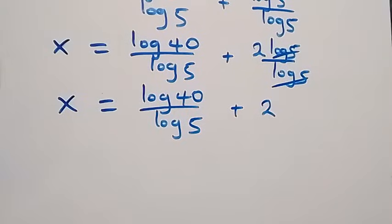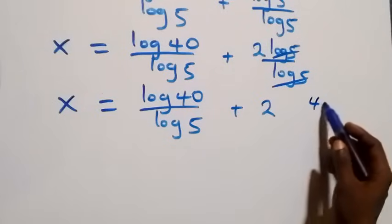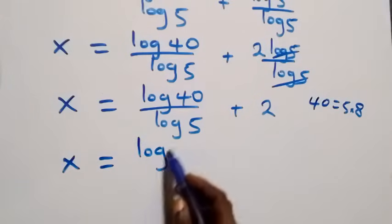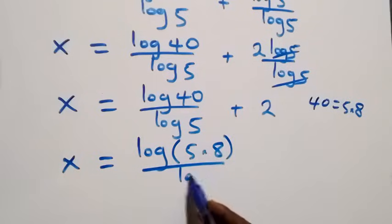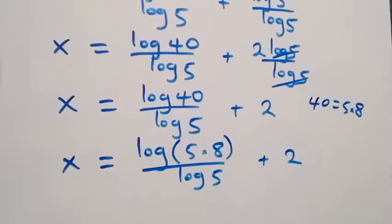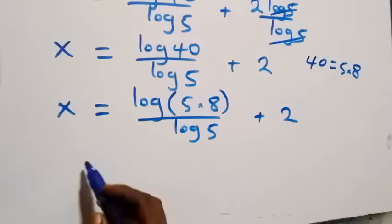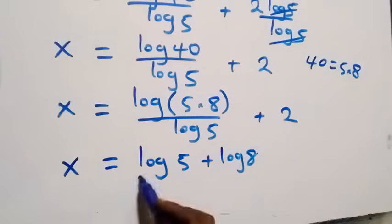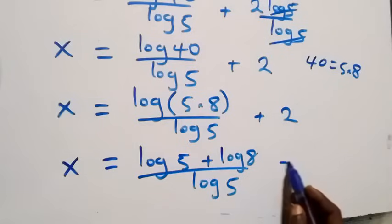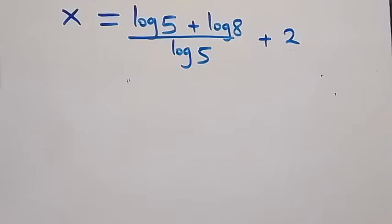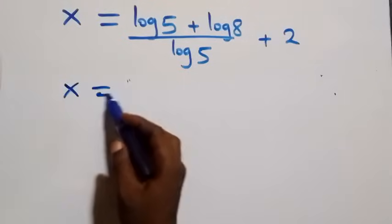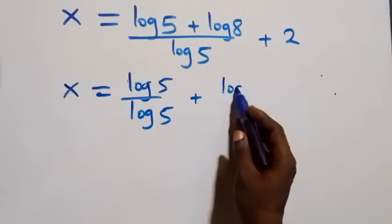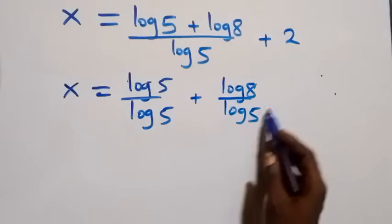We can also write 40 as 5 times 8. So x equals log of 5 times 8 over log 5 plus 2. Applying the product rule of logarithms, this becomes x equals log 5 plus log 8 over log 5 plus 2. Separating into two fractions: x equals log 5 over log 5, plus log 8 over log 5, then plus 2.